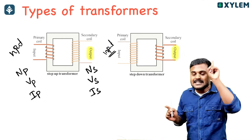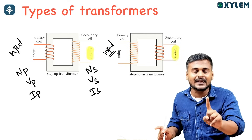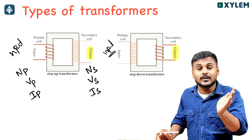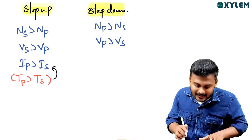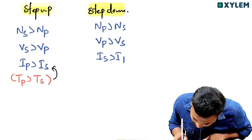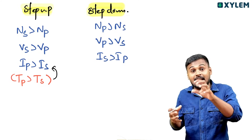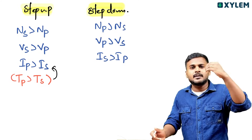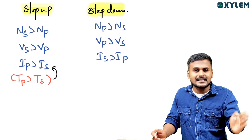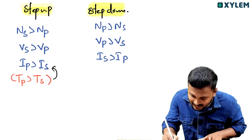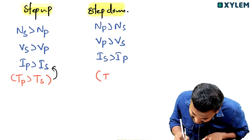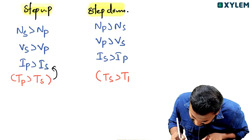For step-down, the secondary coil is thicker. The output current Is is greater than Ip. Secondary returns a higher current. So Is is greater than Ip. The thickness of secondary is greater than the thickness of primary.